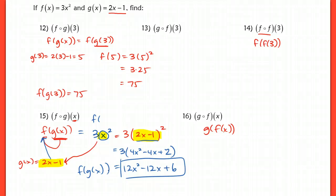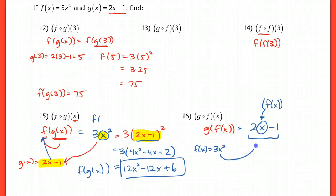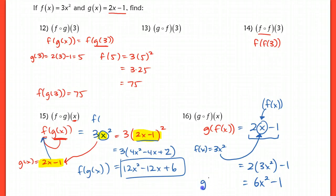When we compute g of f of x, this time we take our function g, which is 2x minus 1. Instead of having x as input, that x should actually be f of x — we need to take the entire function f of x and plug that in for x. Remember f of x equals 3x squared. So I have 2 times 3x squared minus 1, which gives 6x squared minus 1. So g of f of x is equal to 6x squared minus 1.